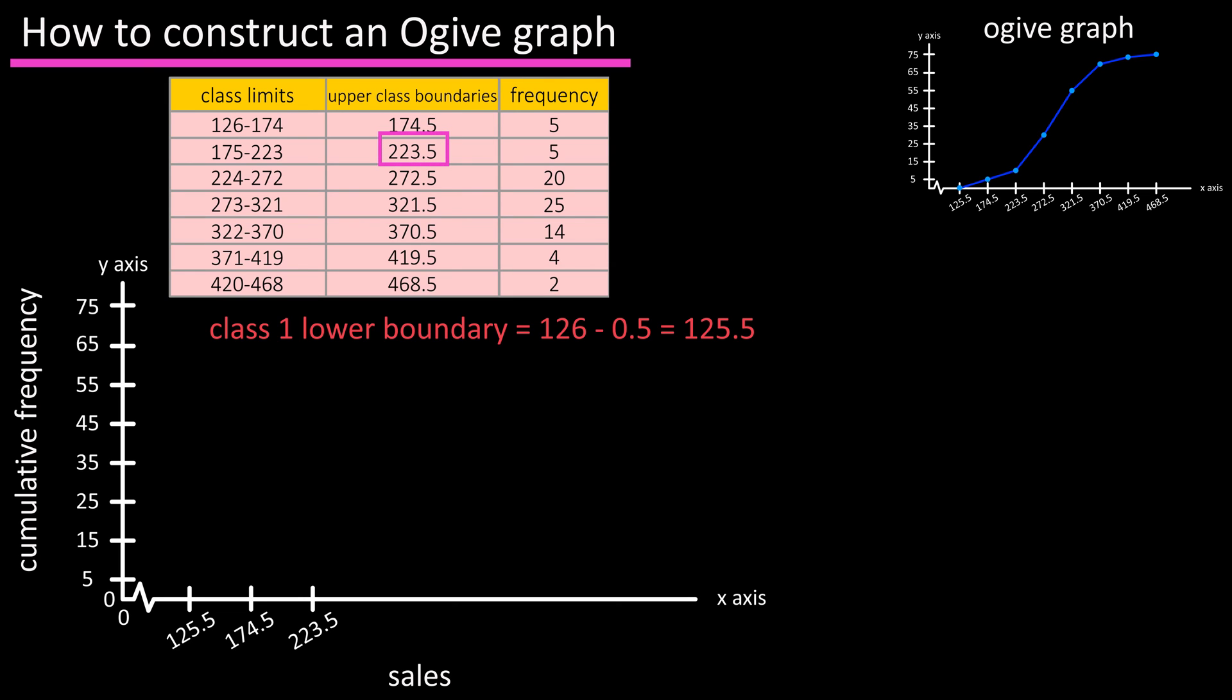Then 223.5, the upper class boundary for class two here, and continue on marking all the upper class boundaries for the rest of the classes on the x-axis as you see here. Again make these so that they are the same distance from one another, or at least within reason if you're drawing this by hand.